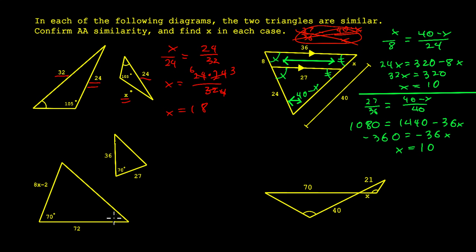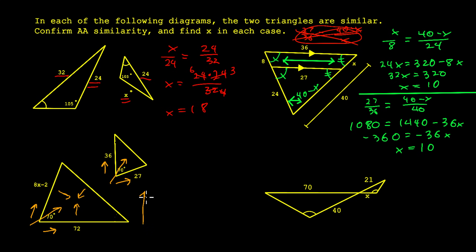Coming down to the lower left, you'll notice the tick marks have temporarily disappeared. This is to show why you need AA similarity and why you must use those angles to identify corresponding sides. You might be tempted to just look across the 70-degree angle on both triangles and compare 8X minus 2 to 36 and 72 to 27 — but that would not be correct. These two triangles were made by scaling the original, then reflecting it over a line, then rotating it. Because of that reflection, you cannot simply compare sides left and right of the 70-degree angle.